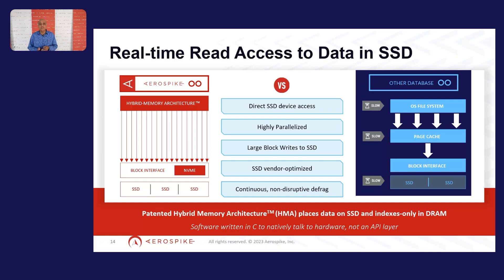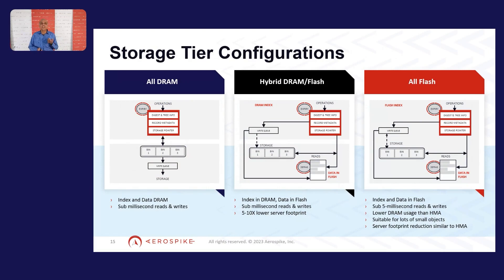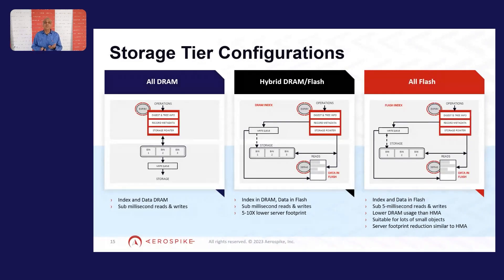We had to redo the SSD file system to deal with large block writes as well as continuous defragmentation. The end result is Aerospike's hybrid memory architecture expands the footprint of data in a node from being just stored in DRAM to also being stored in SSDs — working quite differently than traditional buffer-pool-based database structures where data has to be brought into cache to be read. In Aerospike, random access reads happen directly on SSDs with a copy-on-write mechanism, giving us the ability to have storage tier configurations.